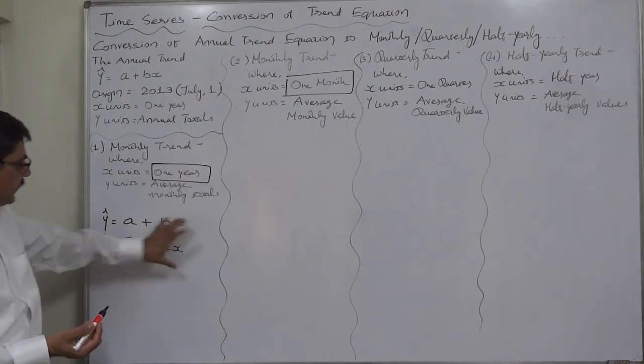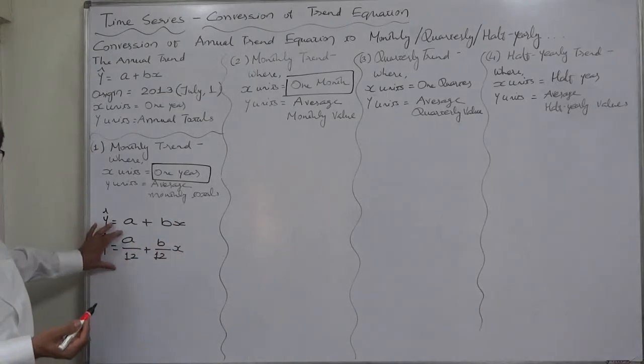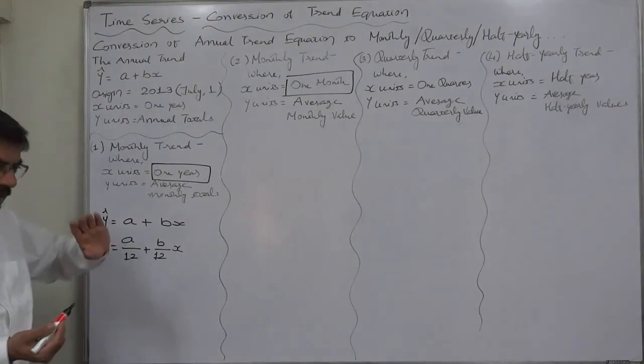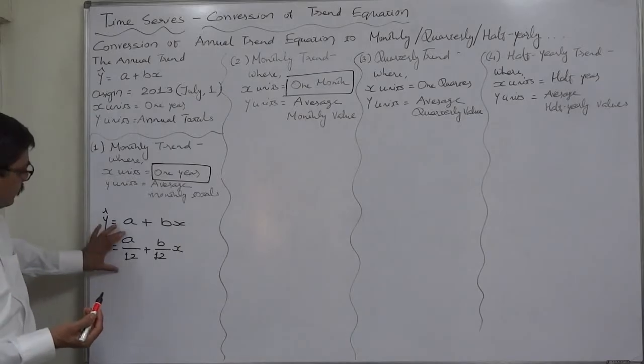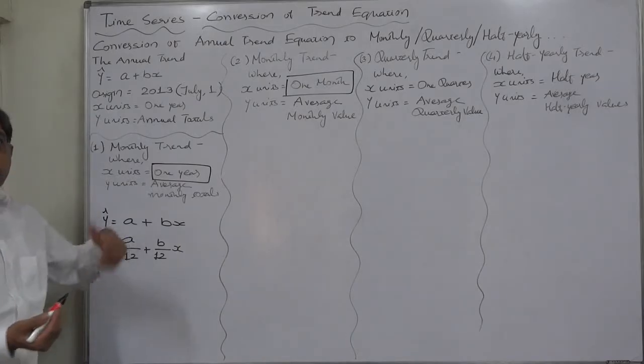b shows the monthly rate of change of the month corresponding to the same month of the next year. So if we say that this is the equation of estimated value of y for January, we can estimate the value of y for next January.